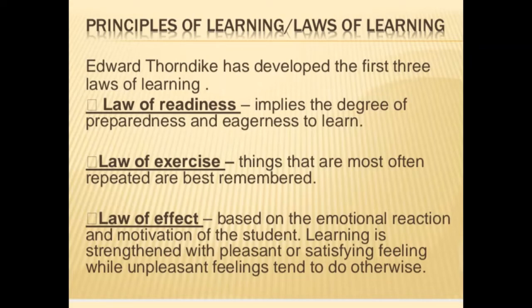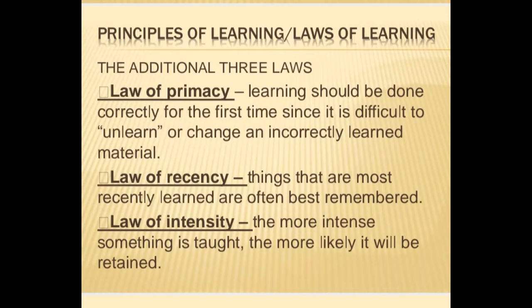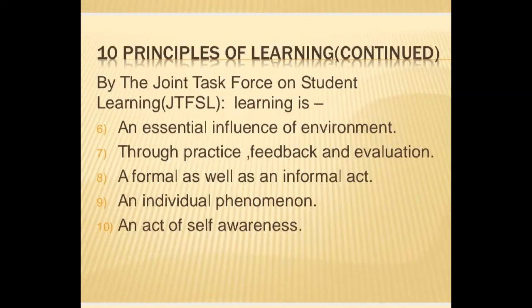The affective domain levels include: receiving, responding, valuing, organization, and characterization. For the psychomotor domain, the levels are: perceiving, set, guided response, mechanism, complex overt response, adaptation, and origination.